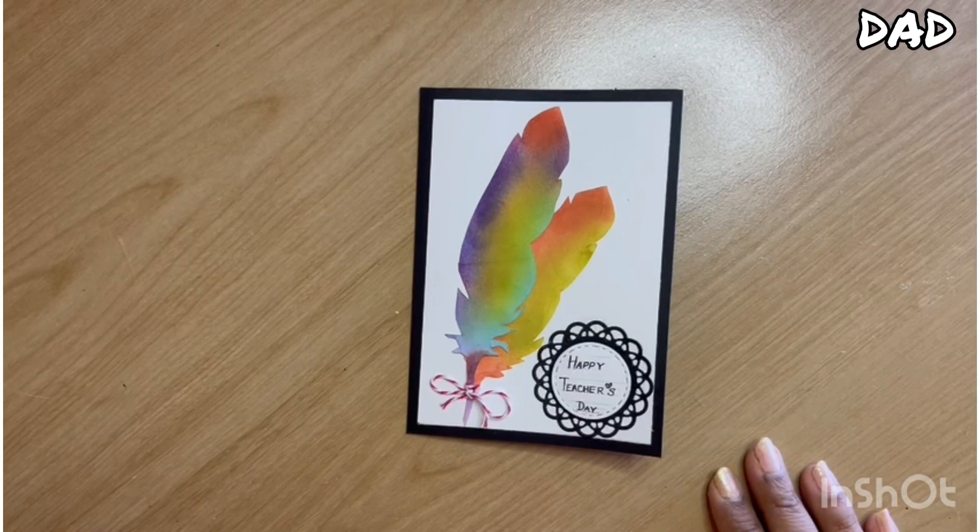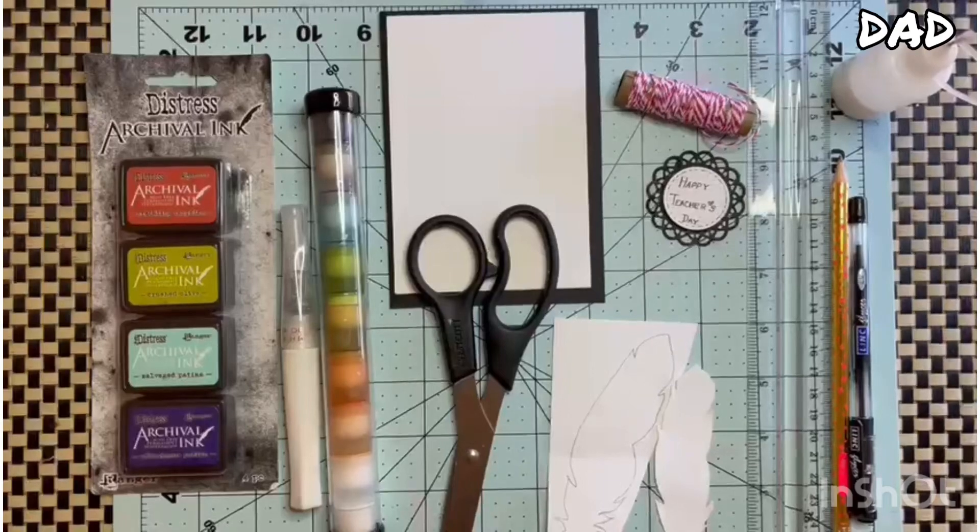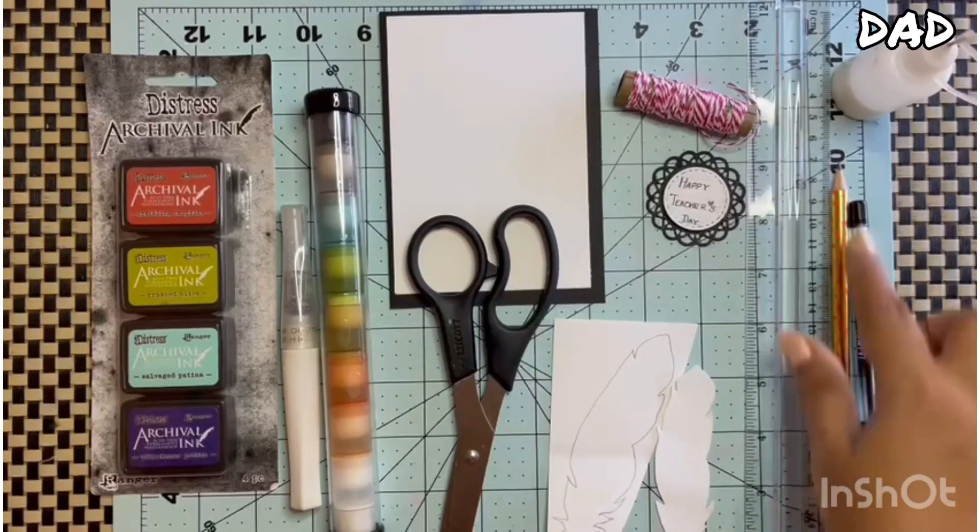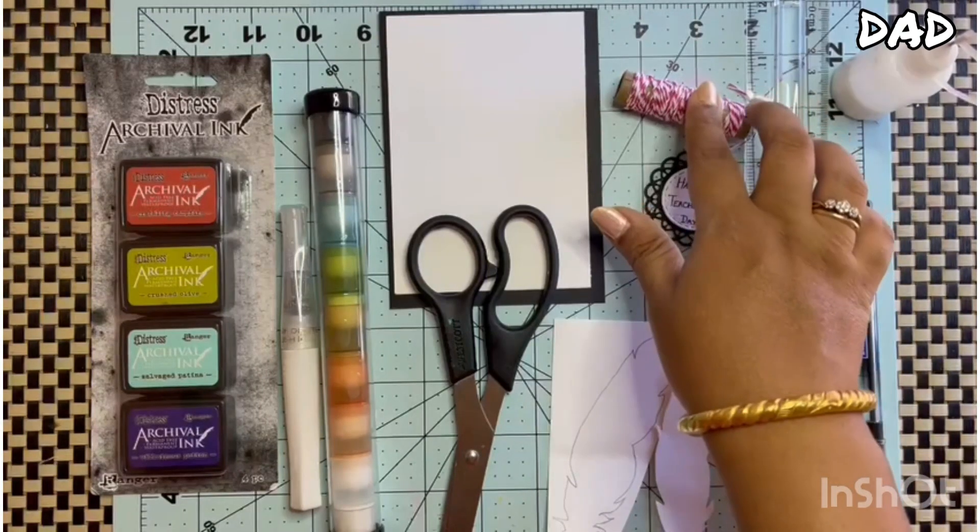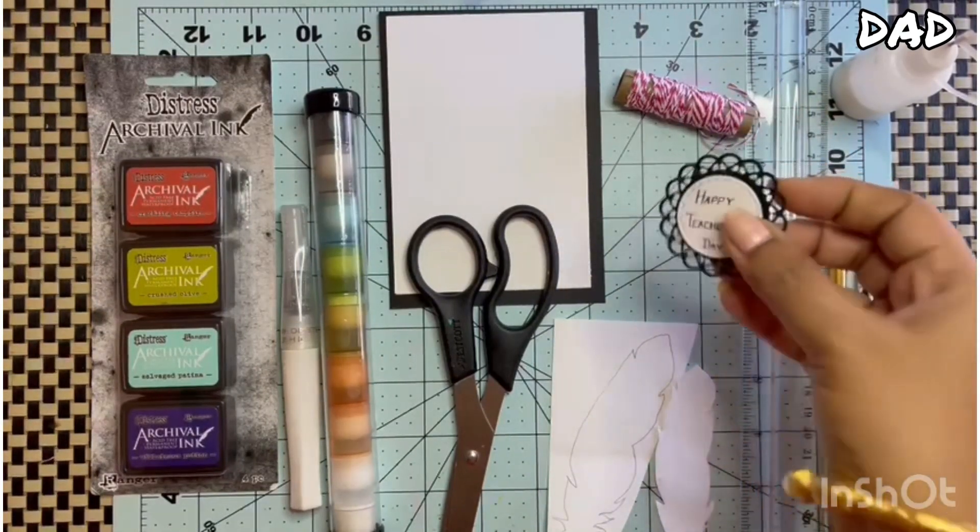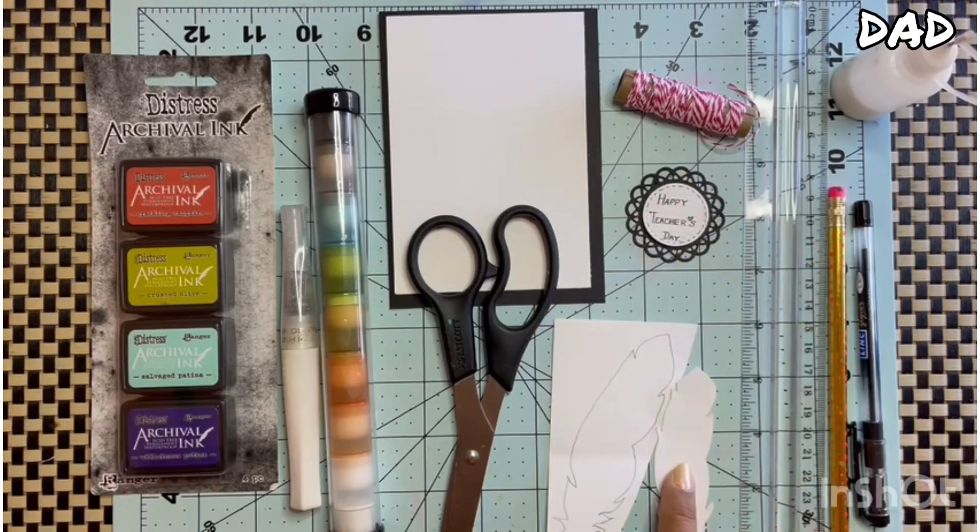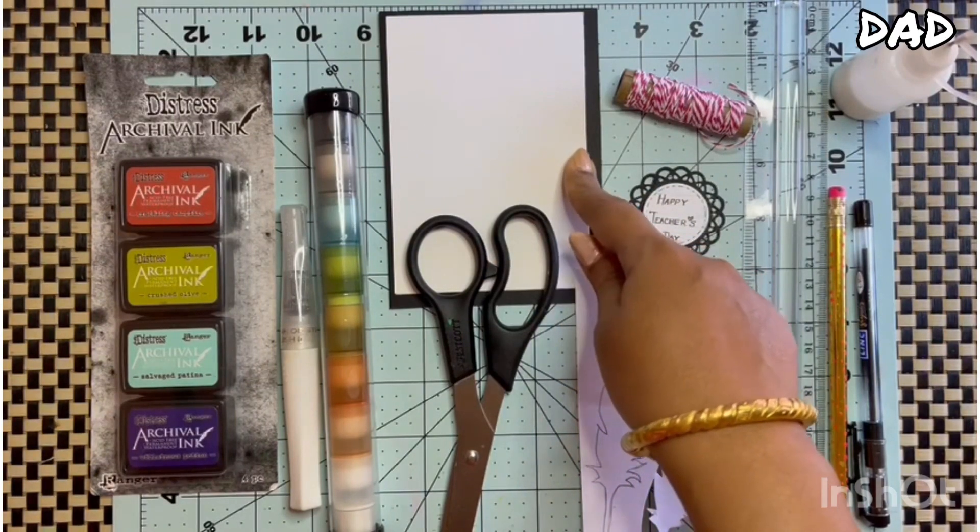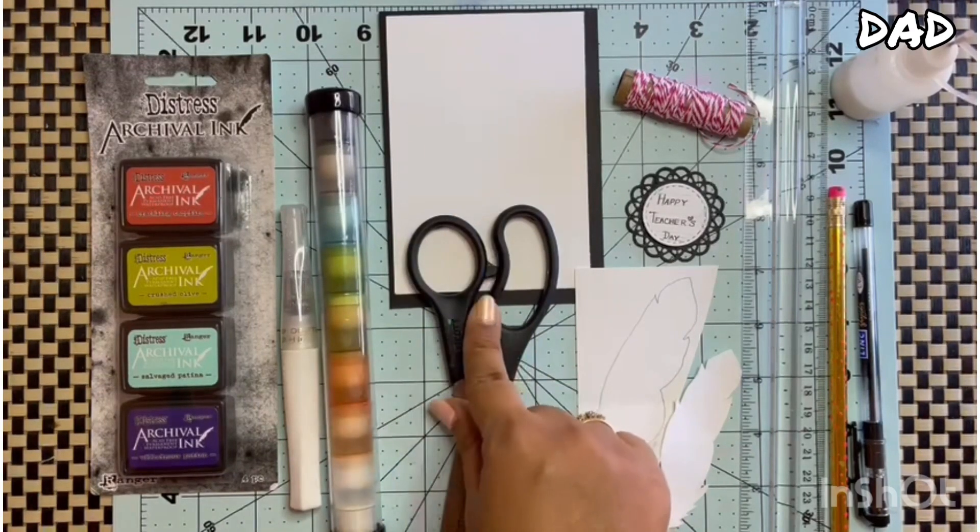For today's tutorial, here are all the materials I will be needing: glue, pen, pencil with a small eraser on top, ruler, thread, die cut out with handwritten sentiment on it, hand-drawn feather style cutout, two papers, ink, ink blending tool, a pair of scissors, and my glitter pen.